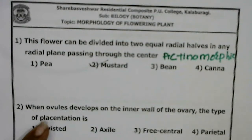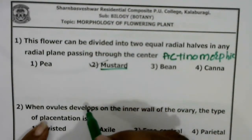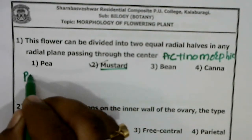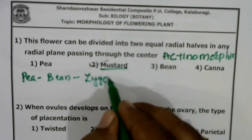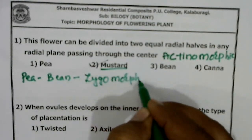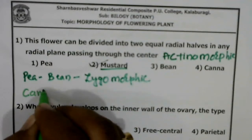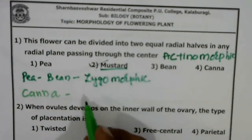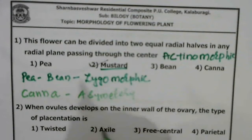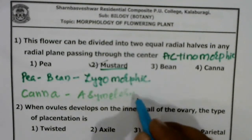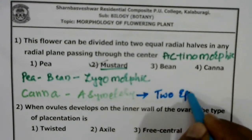In mustard, we can divide the flower into two equal halves. Whereas in pea and bean, it is a zygomorphic flower. Canna is a flower that has asymmetry — you cannot divide it into two equal parts.